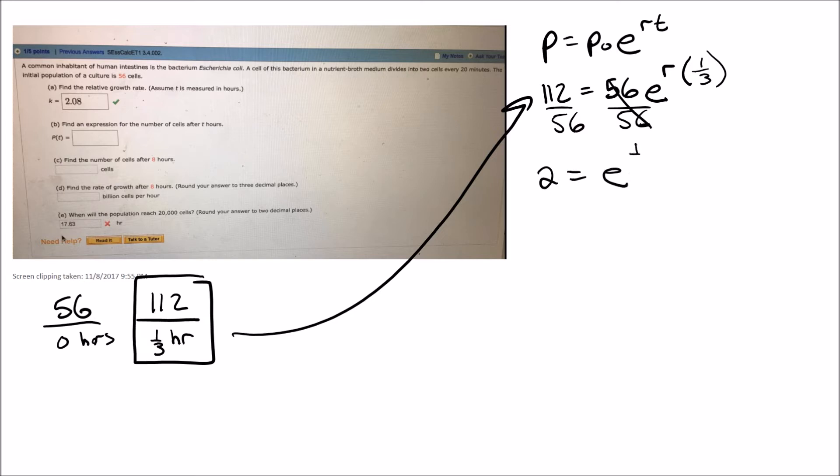And then we take the ln of both sides, so we get the ln of 2 equals the ln of e to the one third r.